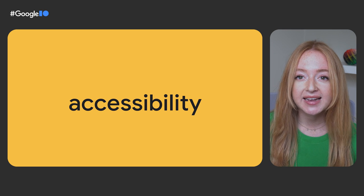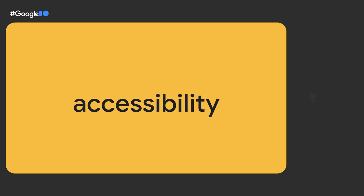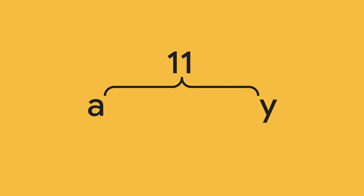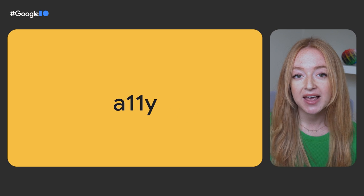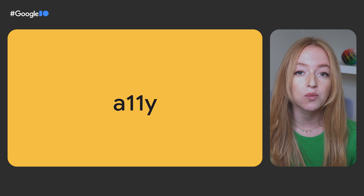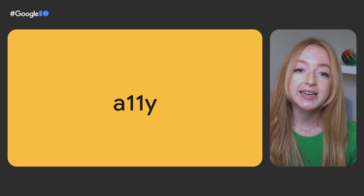In this course, "a11y" is shorthand for accessibility — notice that the A is followed by 11 characters and a Y. Today we'll use best practices and built-in techniques to address common web accessibility issues in a demo Dumpling Shop Angular app. By the end, our app will meet accessibility guidelines WCAG 2.0 and ARIA 1.2, and pass Axe and Lighthouse accessibility audits.